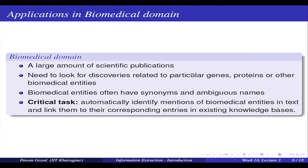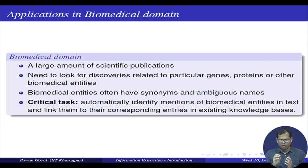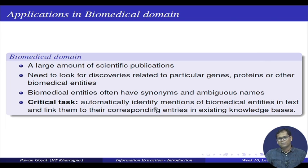A lot of information is there but all in a very unstructured form. Suppose I need to look for discoveries related to various genes, proteins, or other biomedical entities. These entities can have various synonyms and there are a lot of ambiguous entities involved. The task is to automatically identify mentions of biomedical entities in the text, find out all the entities mentioned, and then link them to their corresponding entries in their lexical database. This is very similar to the entity linking problem. Once we find various entities in the document, another task is to find out how they are related to each other - this is called relation extraction, which is one of the focus areas of the next three lectures.